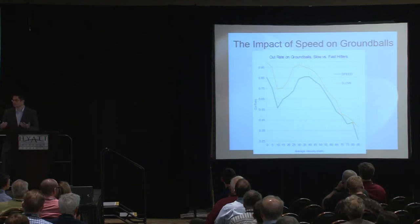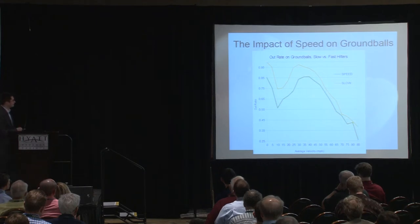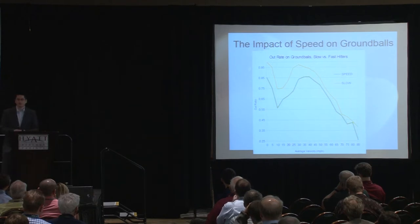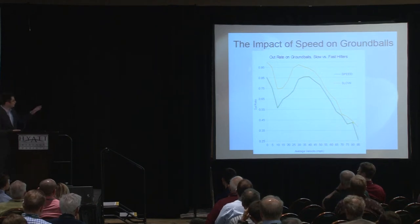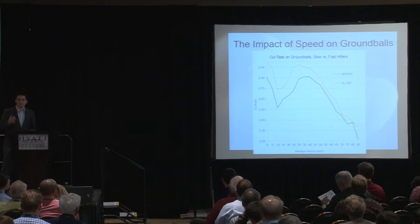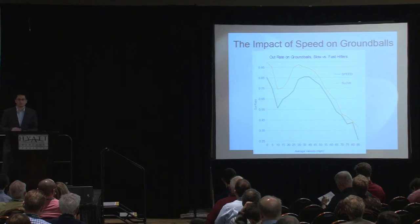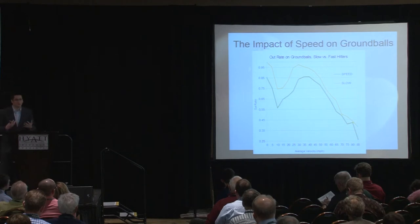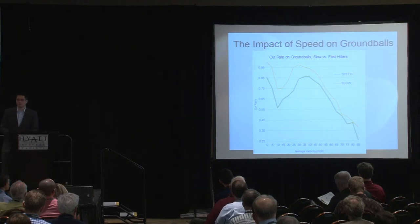One important variable on ground balls is speed. As you'd expect, faster guys beat out ground balls more often than slower guys. The slow guys had their ground balls converted for outs about 15–20% more often, particularly on the left side of the graph where the ball is hit slower and their speed comes more into play. This is an important variable we'll need to adjust for when looking at individual hitters.